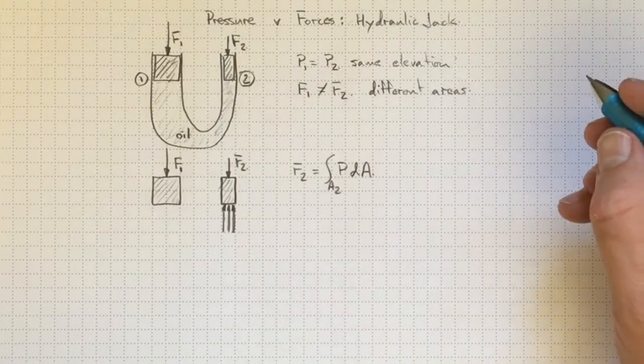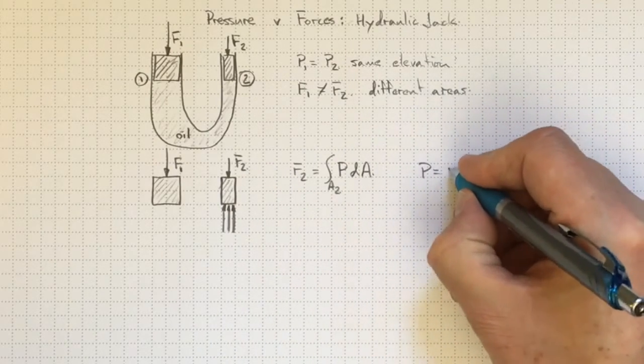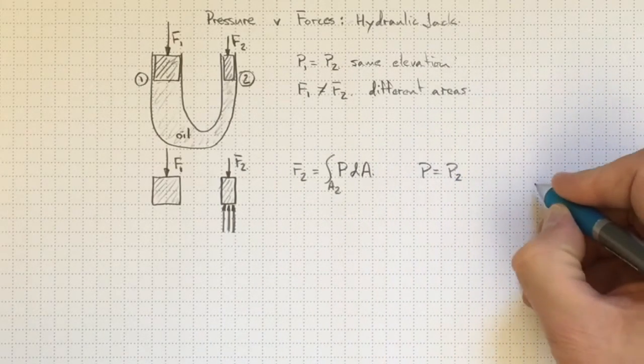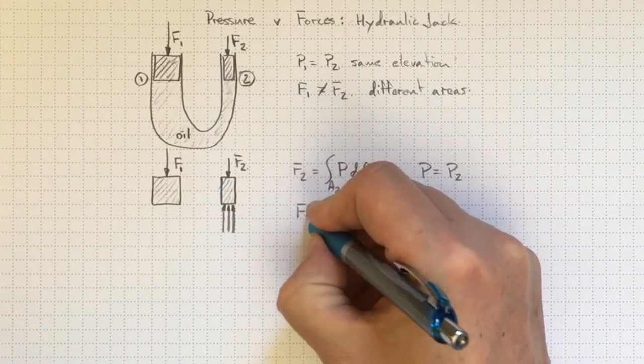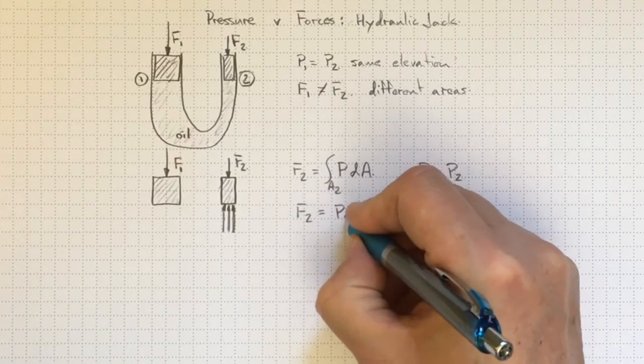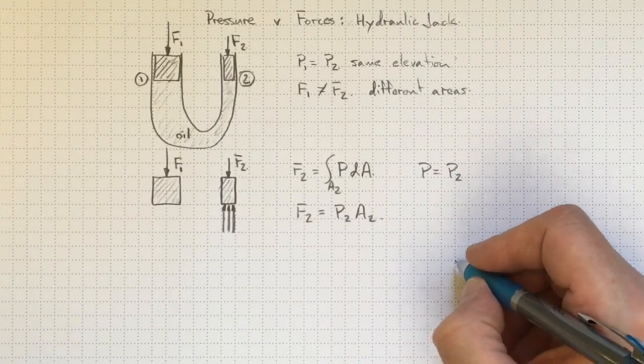And since the pressure here is constant and it's just equal to P2, then we can take that outside the integration and we wind up with F2 equal to P2 A2. If we do the same thing over here,